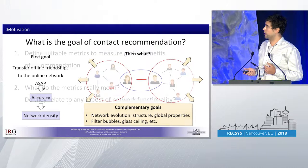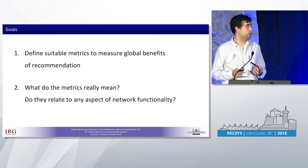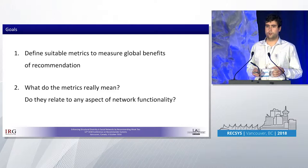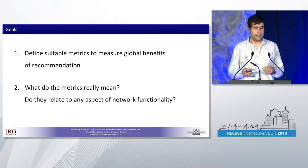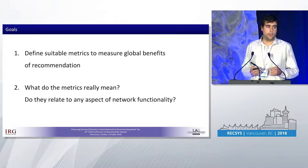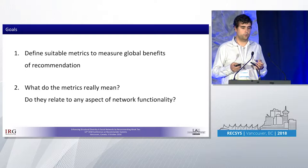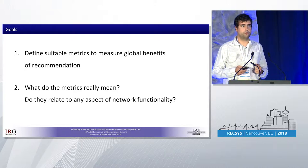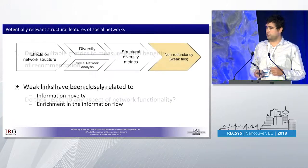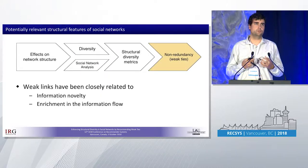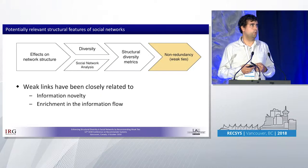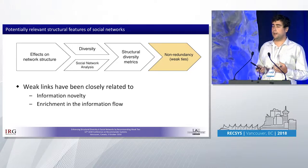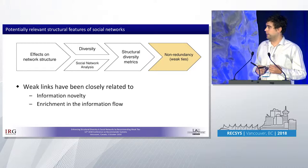Our work has two different goals. First, to define some suitable metrics that target global benefits for all the users in the network, and then to determine what real meaning those metrics have in terms of network functionality. In order to define those metrics, we wanted to know what effect contact recommendation algorithms have on the structure of the network.